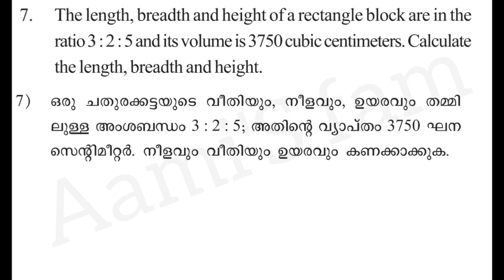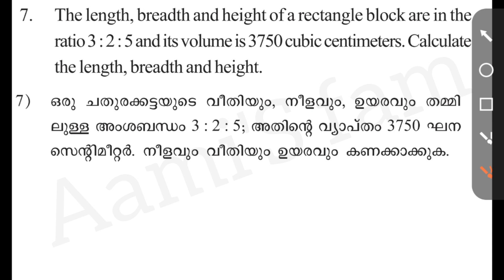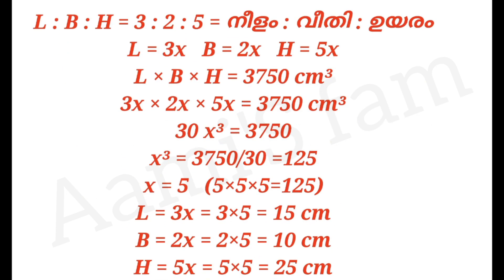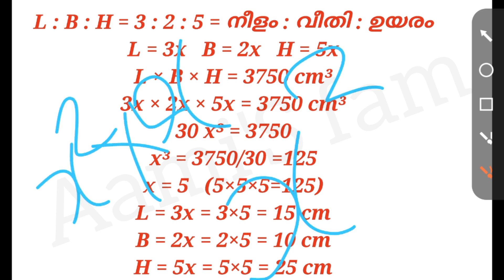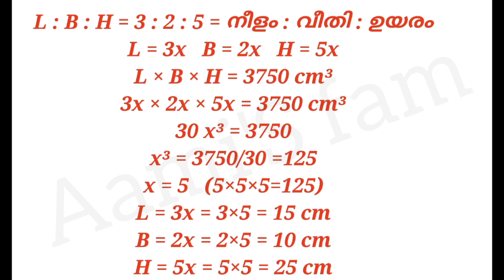Volume equals L times B times H. So 3x times 2x times 5x equals 3750. That gives 30x cubed equals 3750. Dividing, x cubed equals 125, so x equals 5.